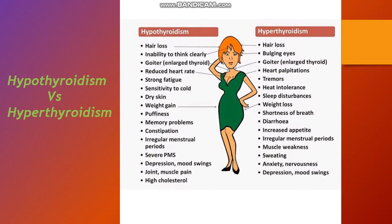Comparing hypothyroidism and hyperthyroidism: hypothyroidism features include hair loss, inability to think clearly, goiter, reduced heart rate, strong fatigue, sensitivity to cold, dry skin, weight gain, puffiness, memory problems, constipation, irregular menstrual periods, depression, mood swings, joint and muscle pains, and high cholesterol. Hyperthyroidism features include hair loss, bulging eyes, goiter, heart palpitations, tremors, and heat intolerance.